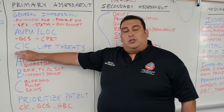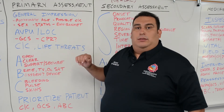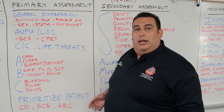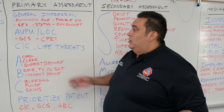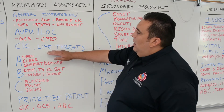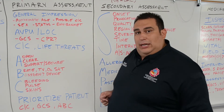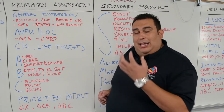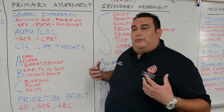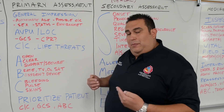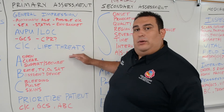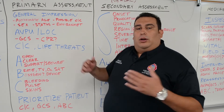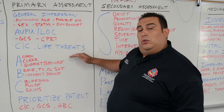From here, we establish the chief complaint — CC. This is only one; we choose the worst thing going on. For an unresponsive patient, the chief complaint is unresponsive. Then we identify any life threats. A life threat could be profuse vomiting blocking the airway, an amputation, or profuse bleeding — something that can kill the patient within seconds. Address that right away. Minor abrasions or a hematoma to the head can be skipped for now.